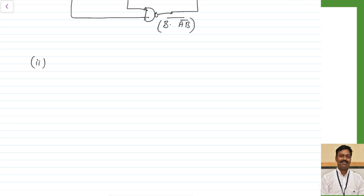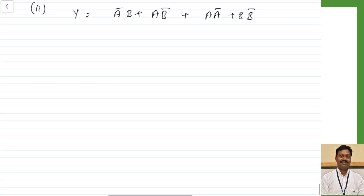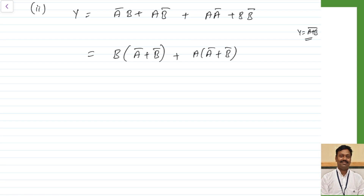Now let us see how to implement using the minimum number of NOR gates. I need to write the expression in the form of the NOR gate. The NOR gate performs addition of two inputs and then bars the result. So unlike the NAND case where we convert to product form, here I convert to addition form. Starting from A bar B plus AB bar, I again add A into A bar and B into B bar, since those equal zero. Taking B as common, this becomes B into A bar plus B bar, and taking A as common gives A into A bar plus B bar.